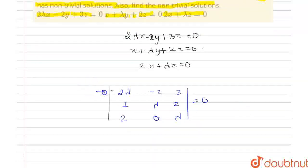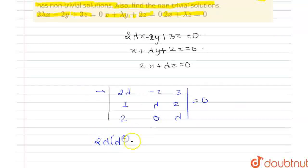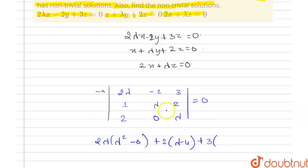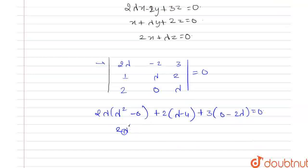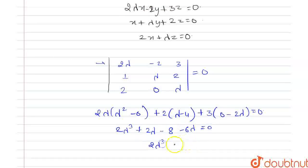We expand the determinant along the first row. We get: 2λ times (λ² − 0), plus 2 times (λ − 4), plus 3 times (0 − 2λ) = 0. This simplifies to 2λ³ + 2λ − 8 − 6λ = 0, giving us 2λ³ − 4λ − 8 = 0.